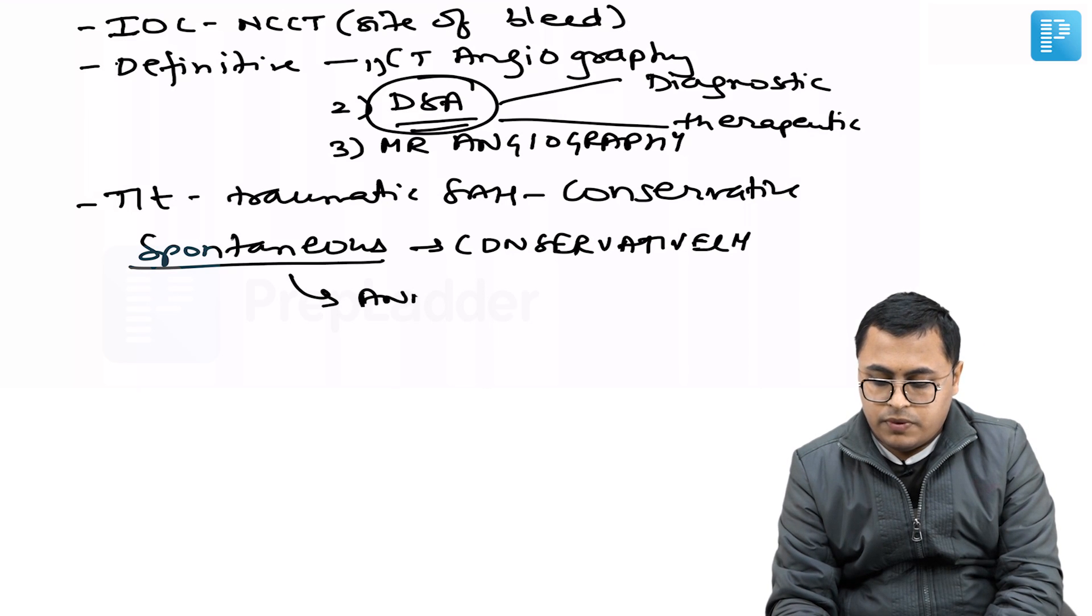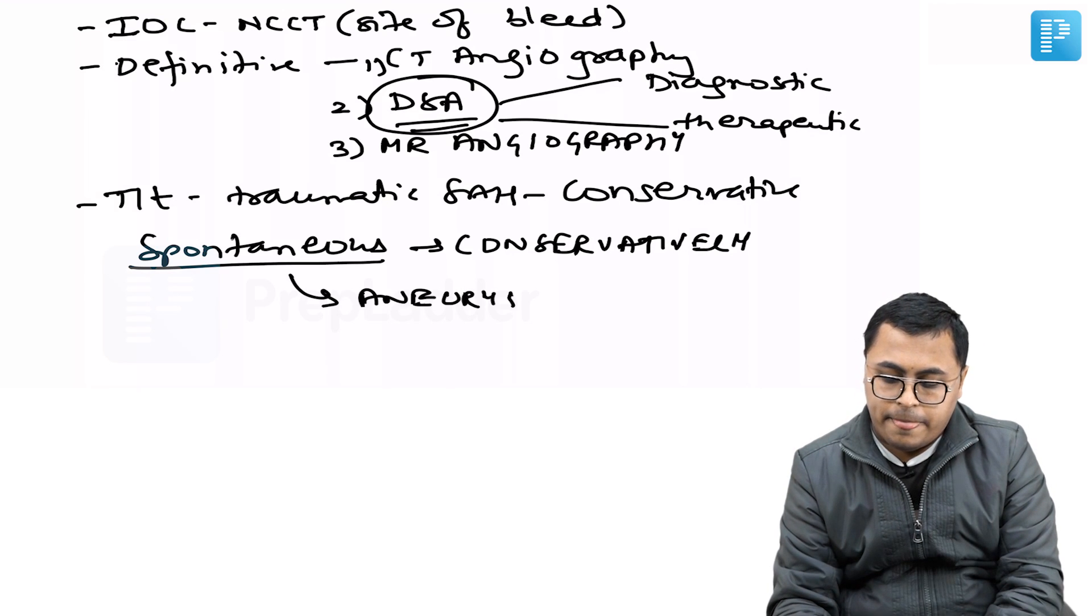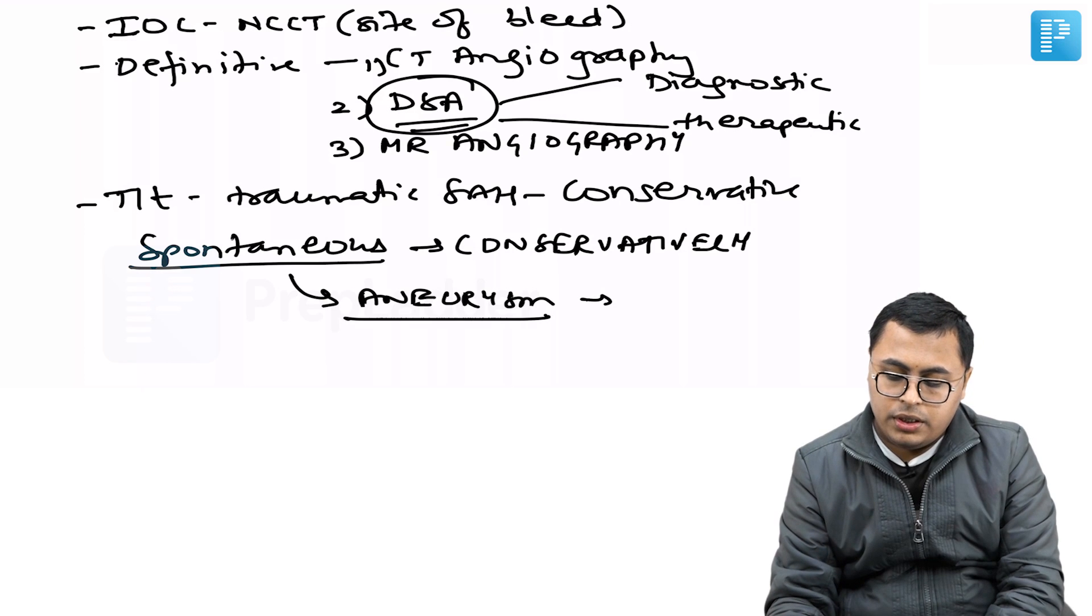If an aneurysm is found, then we have to treat accordingly. Either you can go for endovascular ablation, vascular coiling, or surgical clipping of the aneurysm.